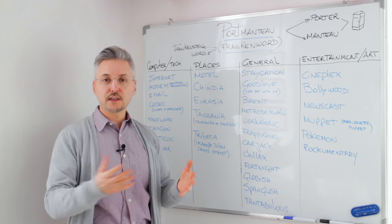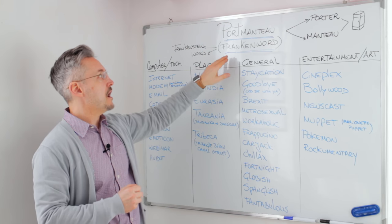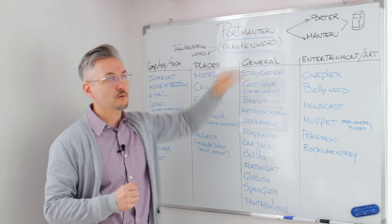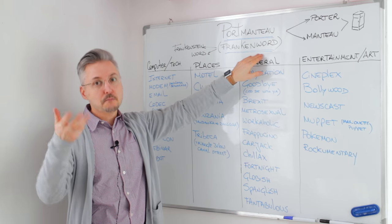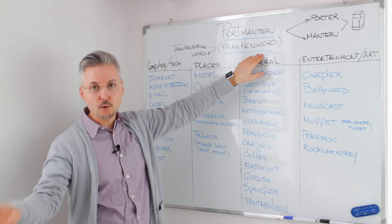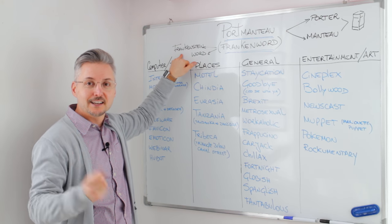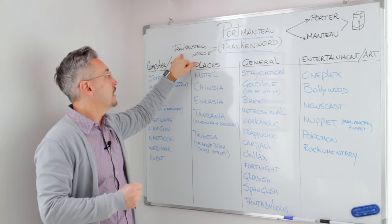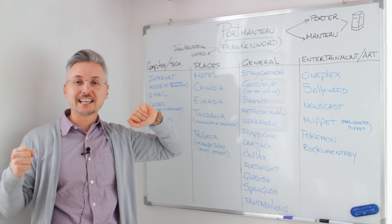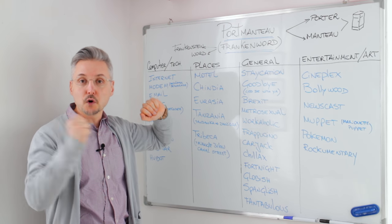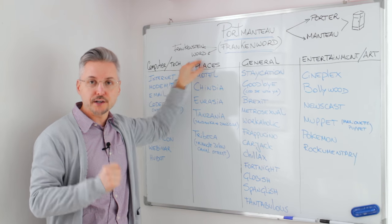Another word that we can use to describe this kind of words is Franken-words. A Franken-word is a portmanteau word, and it comes from Frankenstein, the fictional character of Mary Shelley's book Frankenstein, and the word 'word'.